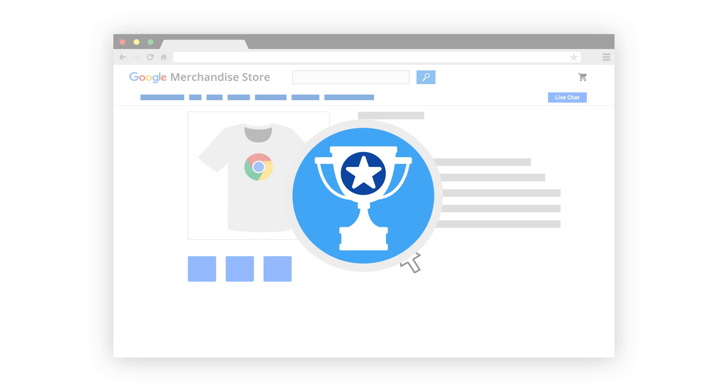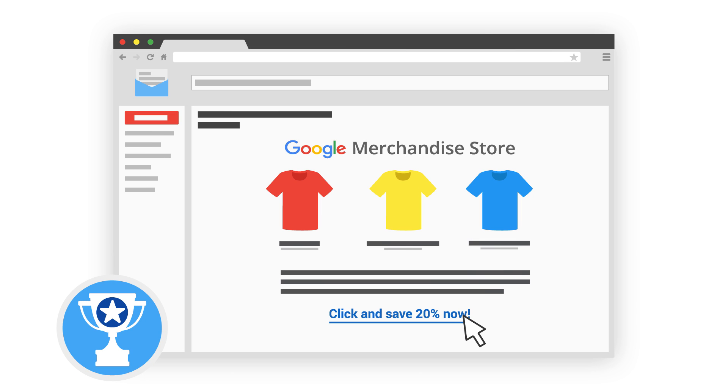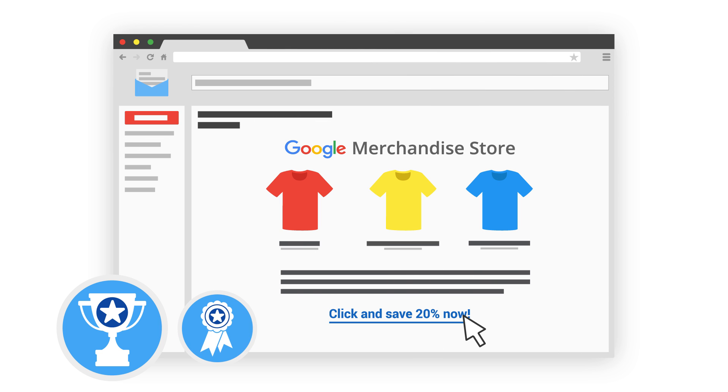But there can also be smaller goals that bring users closer to your main objectives, such as signing up for an email coupon or new product notification. We call these micro conversions since they nudge users closer to your macro conversions.